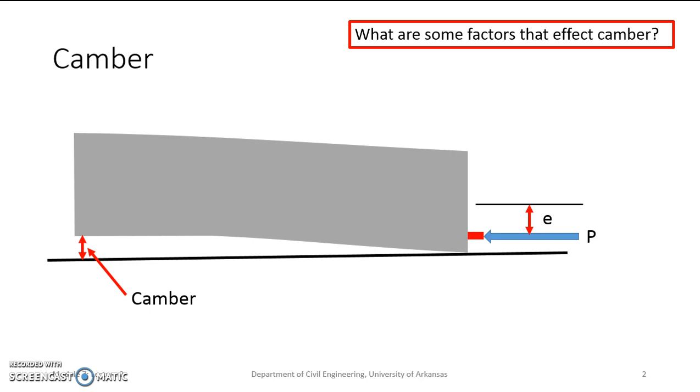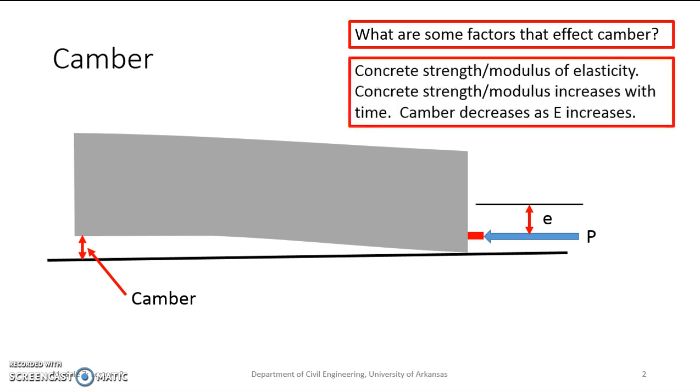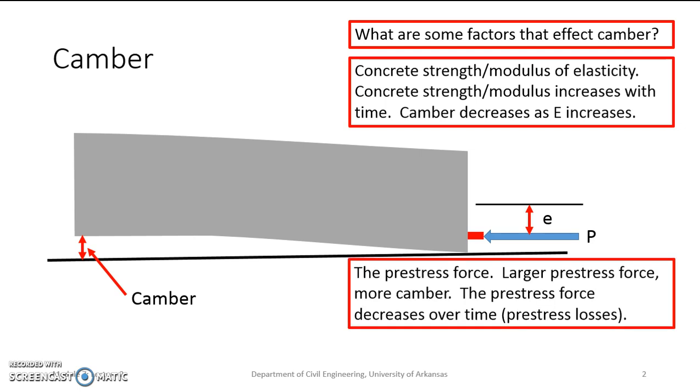If we remember back to module 1, we looked at some of the factors that affect camber. We looked at the concrete strength and the modulus of elasticity. As those two properties increase, the concrete gets stiffer. So as it gets stiffer, the concrete doesn't want to bend as much. Increases in strength and modulus also decrease the amount of camber in our pre-stressed concrete beam.